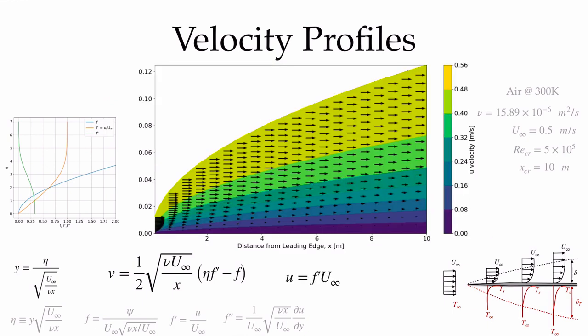Combining u and v components into a full flow field, velocity vectors are plotted over the plate, with the boundary layer edge growing downstream. A contour plot of the u-component shows a beautiful stratification of slow-moving fluid near the wall building up to u_infinity outside the boundary layer — a clear laminar flow pattern.